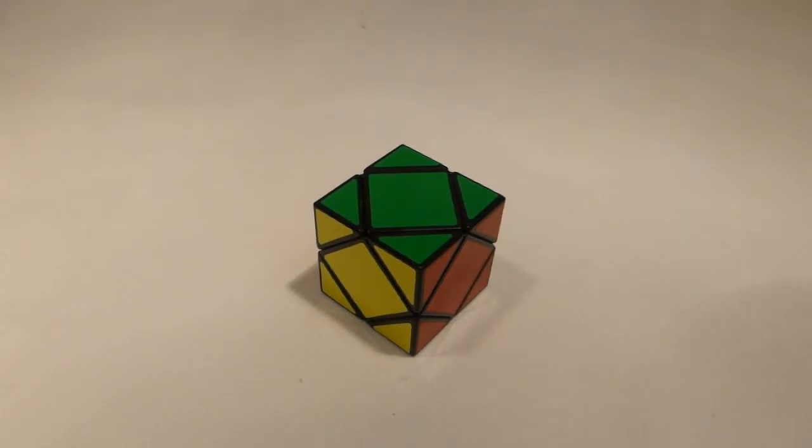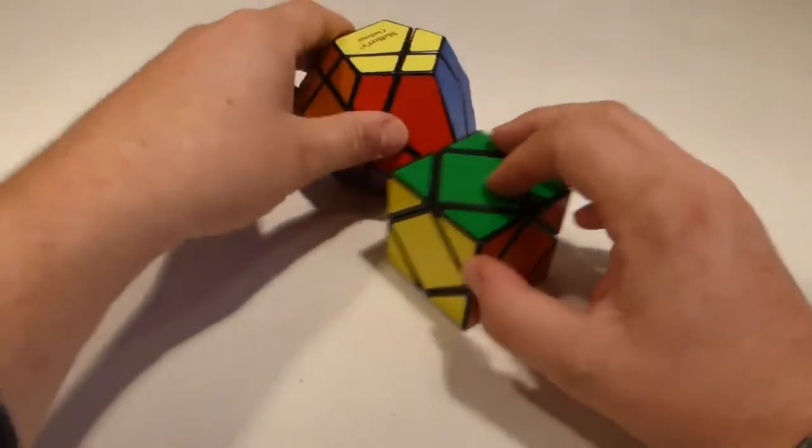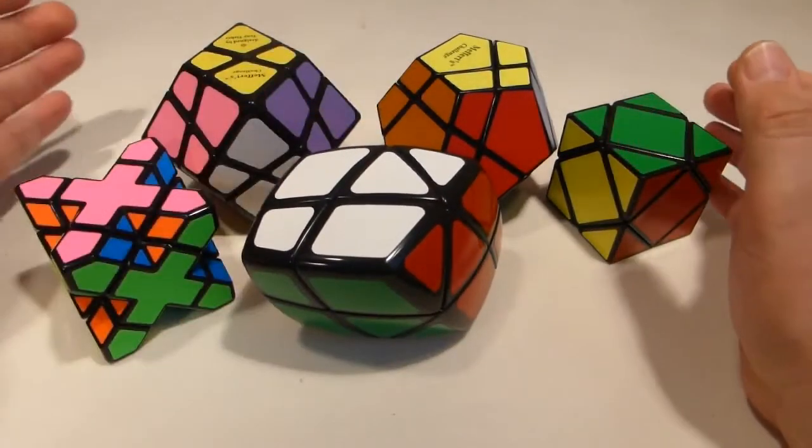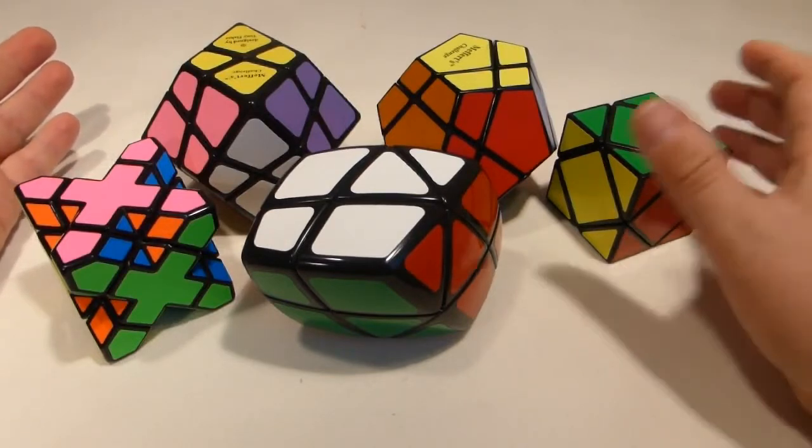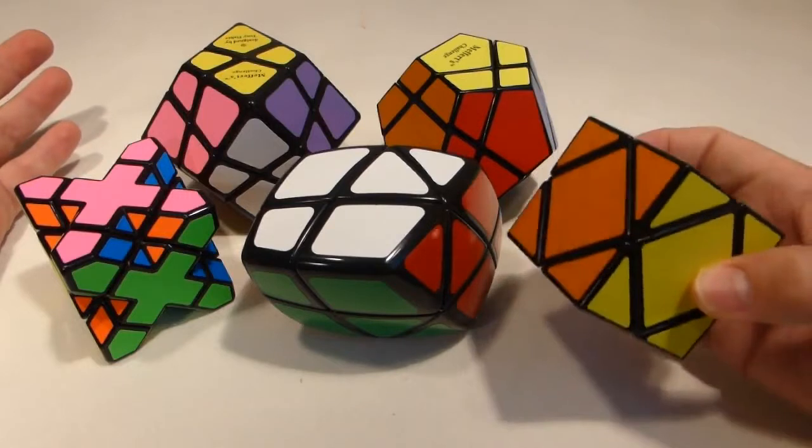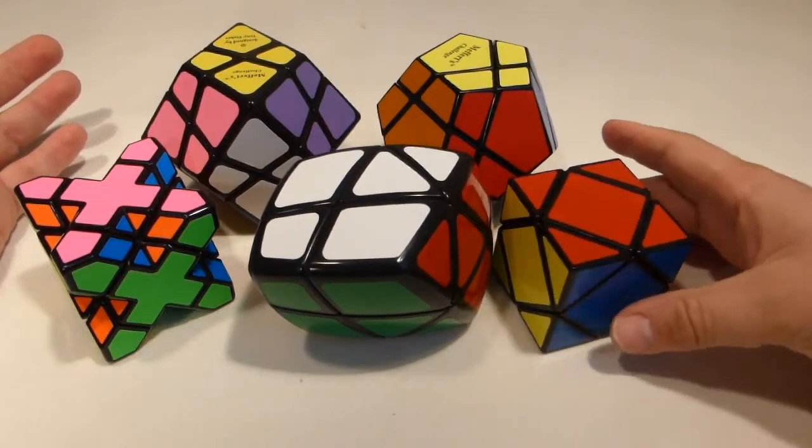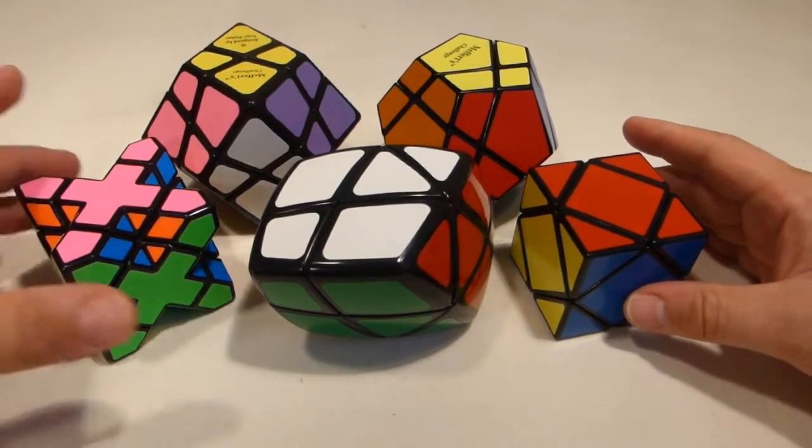So I did say at the beginning of this series I'd only be doing it on puzzles that you can get, so why have I done it on the Skewb? Well, no, I'm not breaking my rules. Well, actually I am, but the point here is that because all of these things are essentially the same solve, even though they may not look like it, they're all actually Skewbs—they're just different shape variants of the Skewb. I don't really think this is necessarily the best Skewb to get.